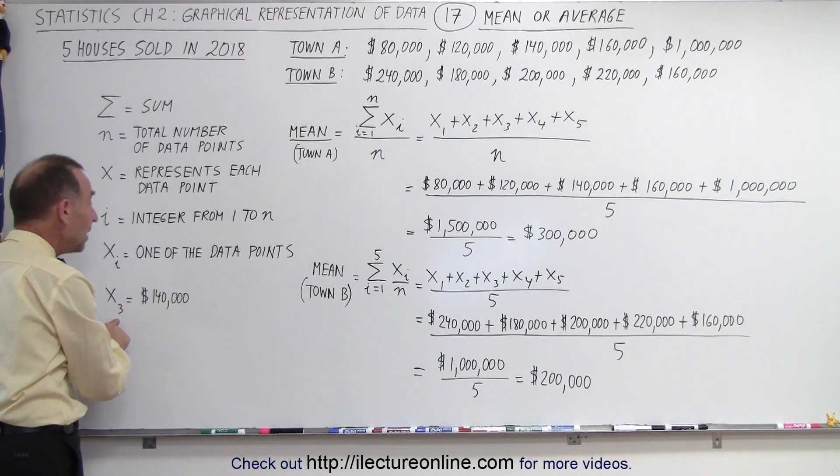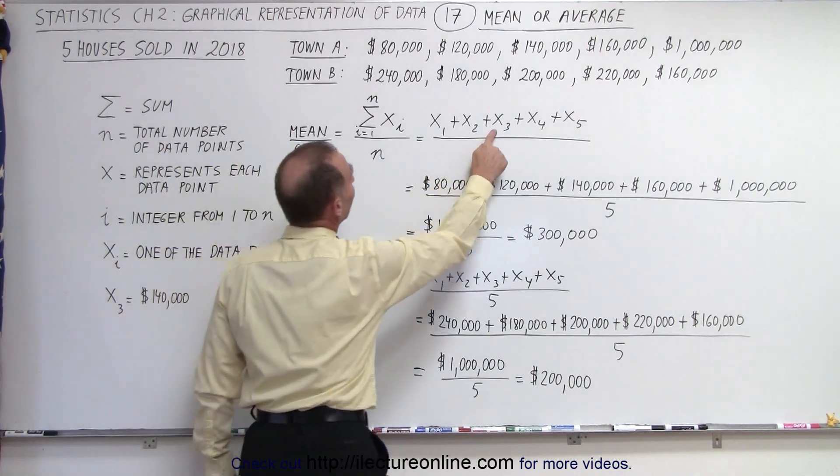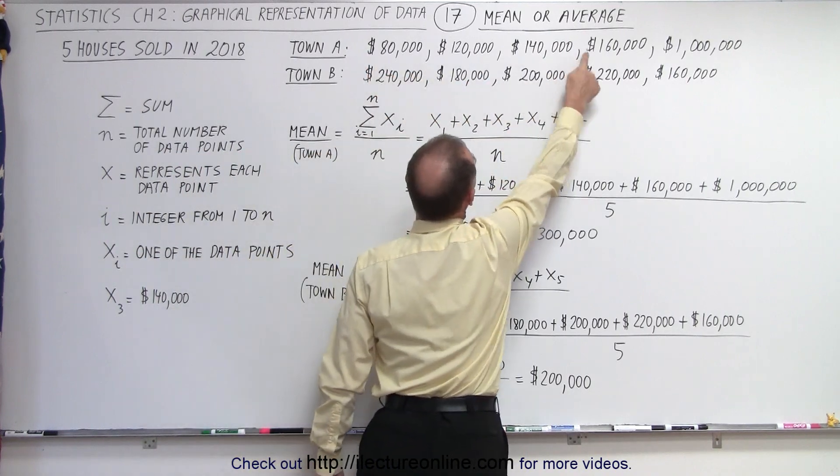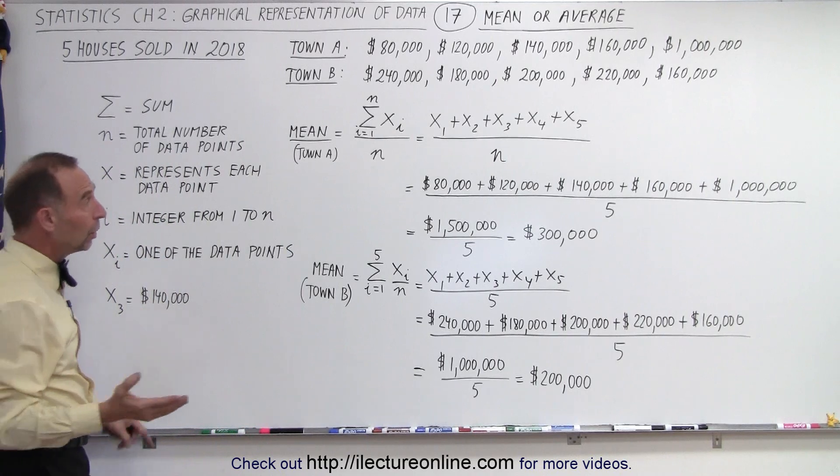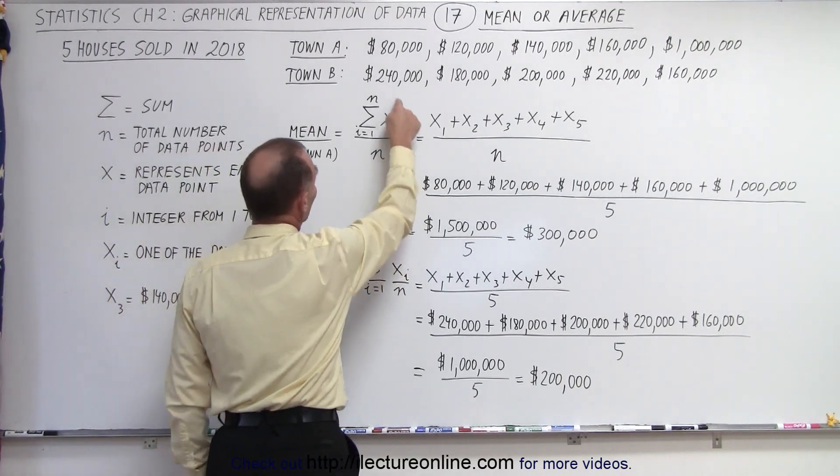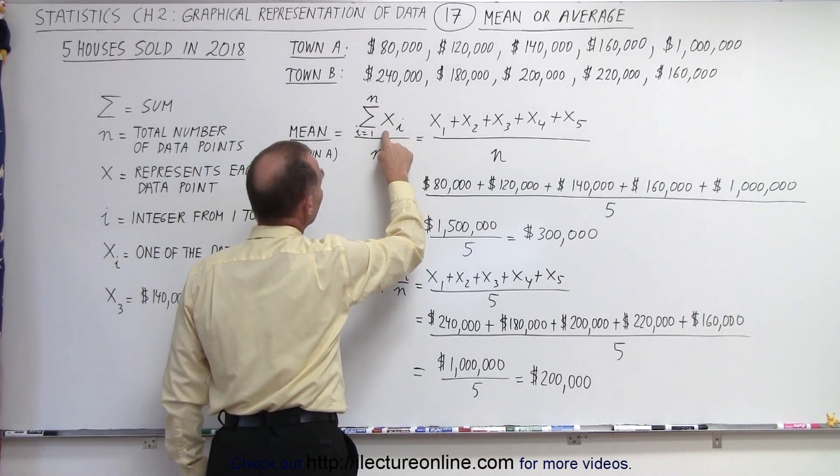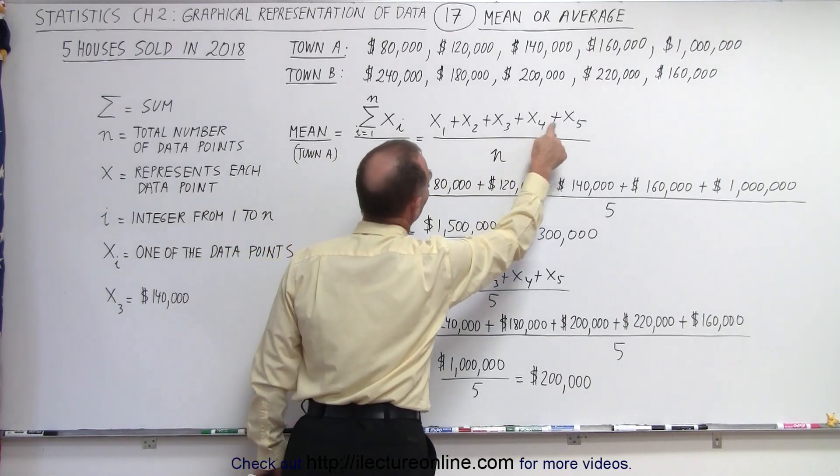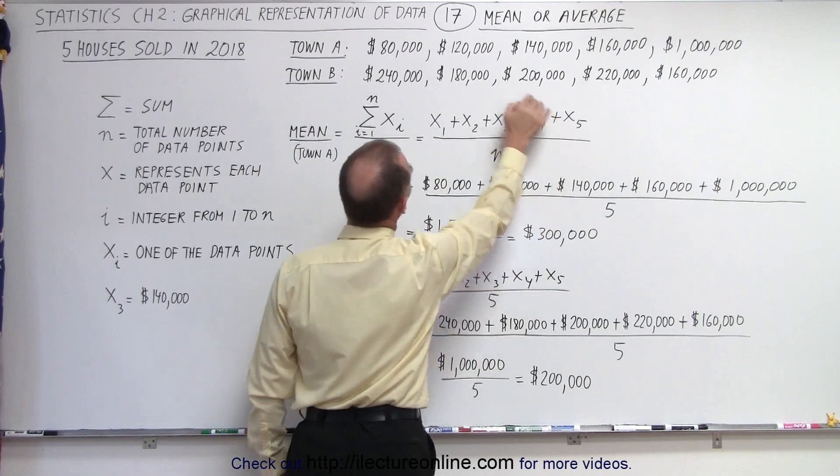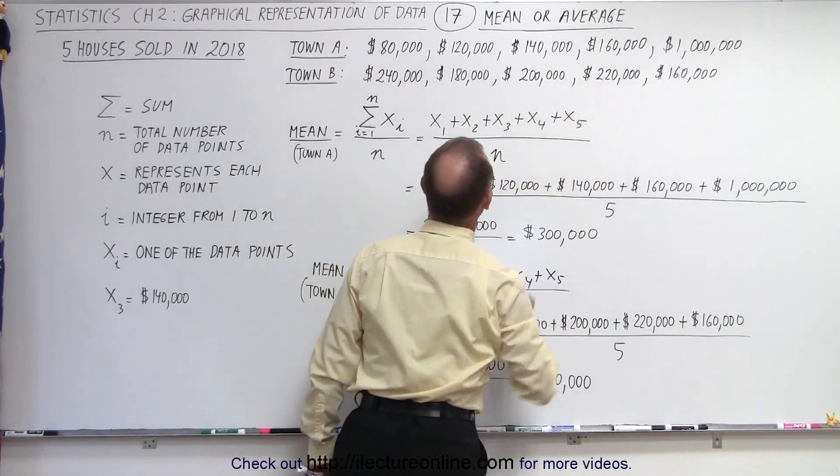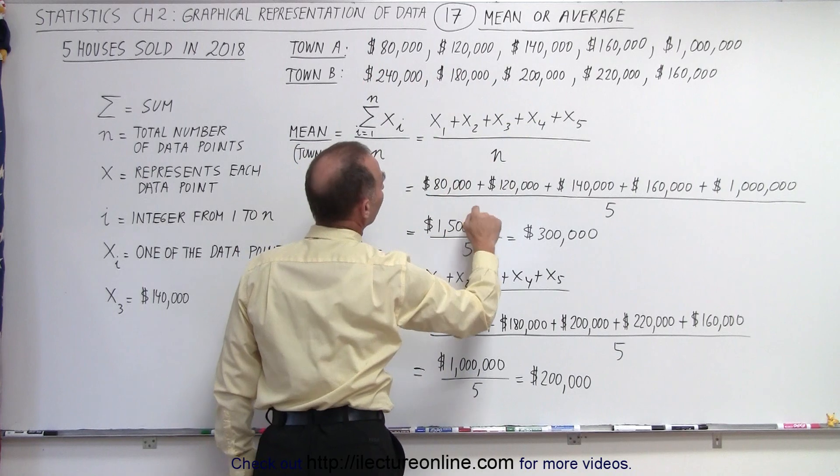For example, X₃ is the third data point of the set and that would be a value of $140,000. So what we can see is that the numerator here simply means the sum of all the data points X₁, X₂, X₃, X₄, X₅ representing the five house prices. N represents the total number of data points. There's five data points here, the five house prices.